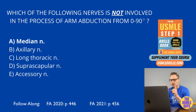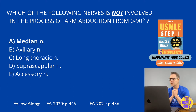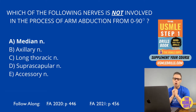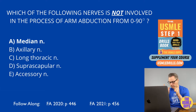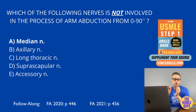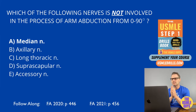Once we get to 90 degrees, two muscles work harmoniously to continue arm abduction: the trapezius and the serratus anterior. The trapezius is innervated by the accessory nerve — we test this during our cranial nerve exam. The serratus anterior is innervated by the long thoracic nerve. Please make sure you know this — very easy points on your exam.